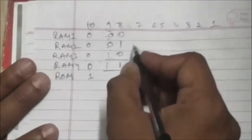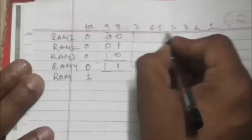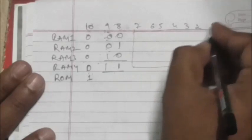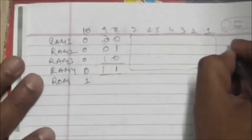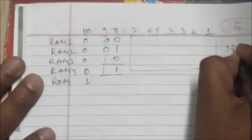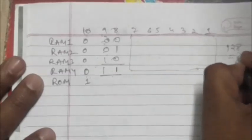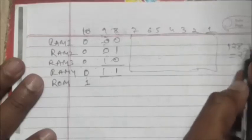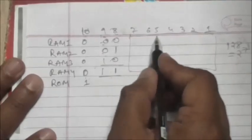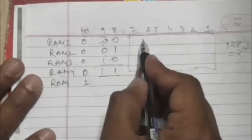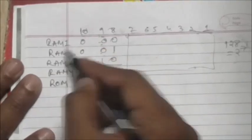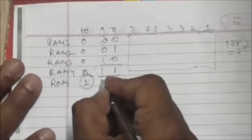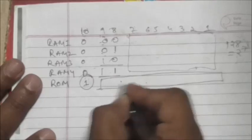In case of RAM, the rightmost 7 bits specify the address of a byte within the RAM chip, because each RAM chip stores 128 bytes (2 raised to 7). For ROM, when the 10th bit is 1, these 9 bits specify the address of a byte in the ROM chip.